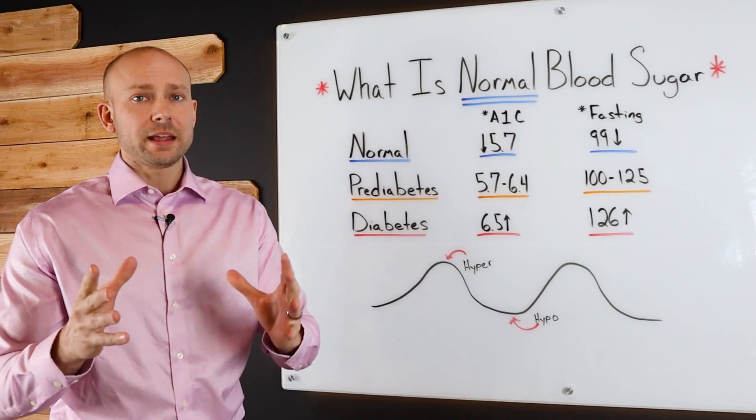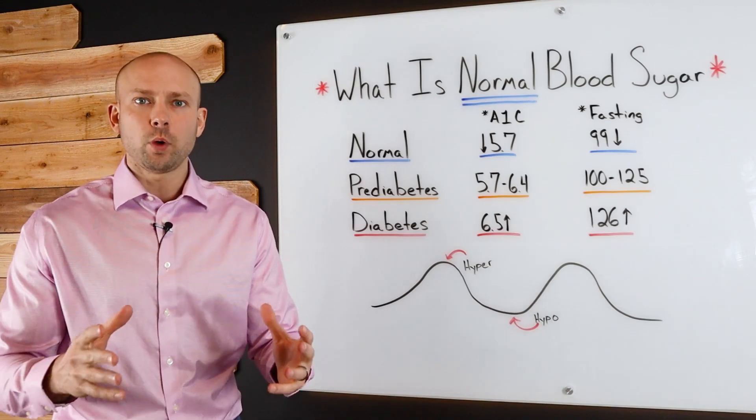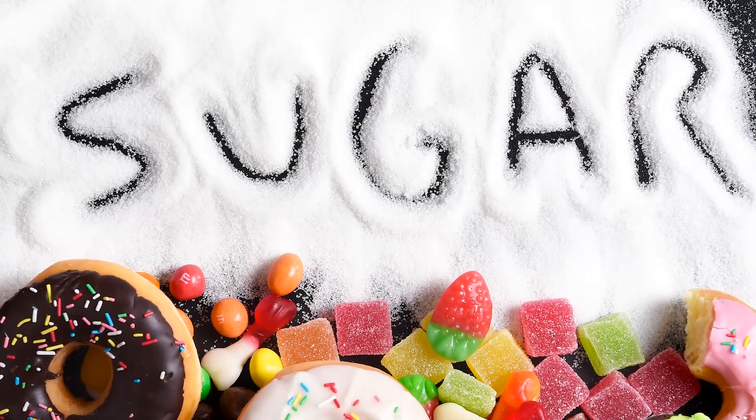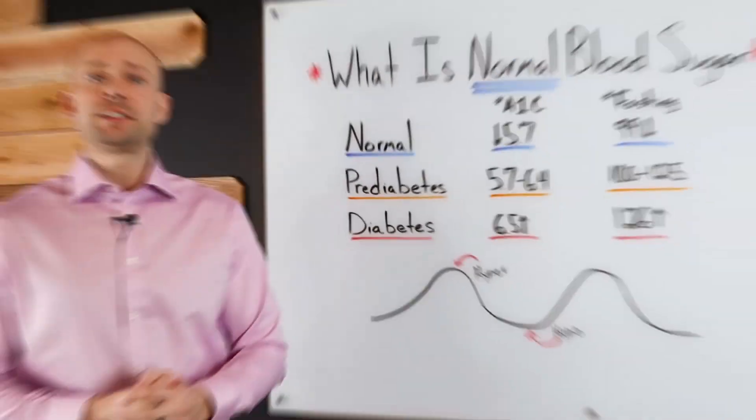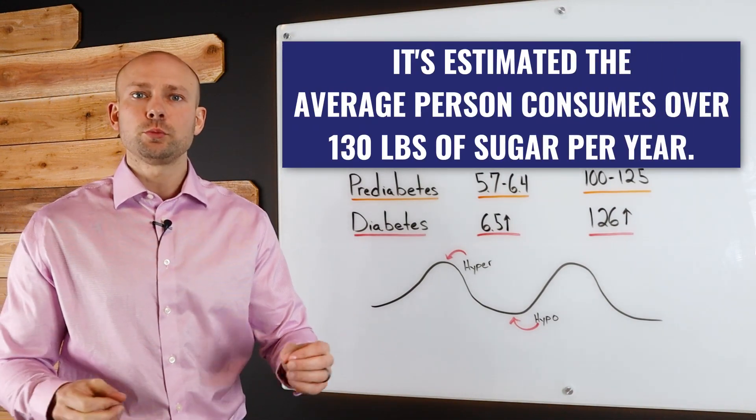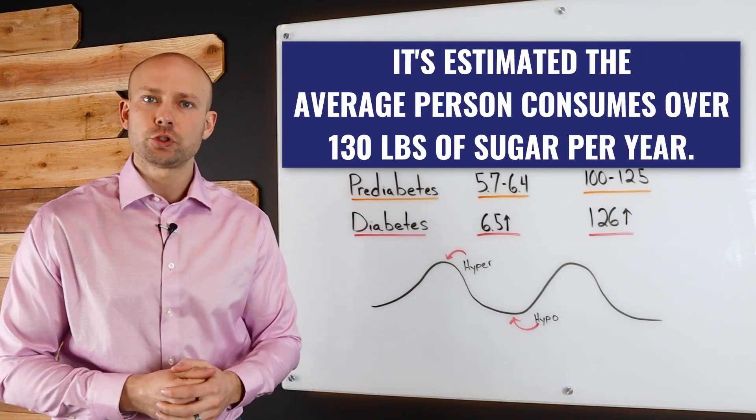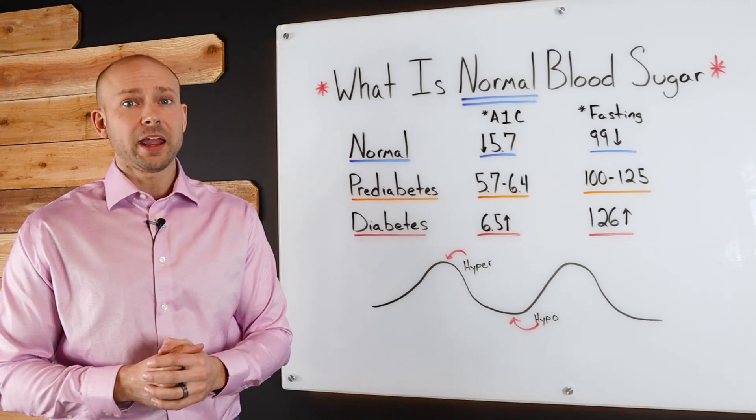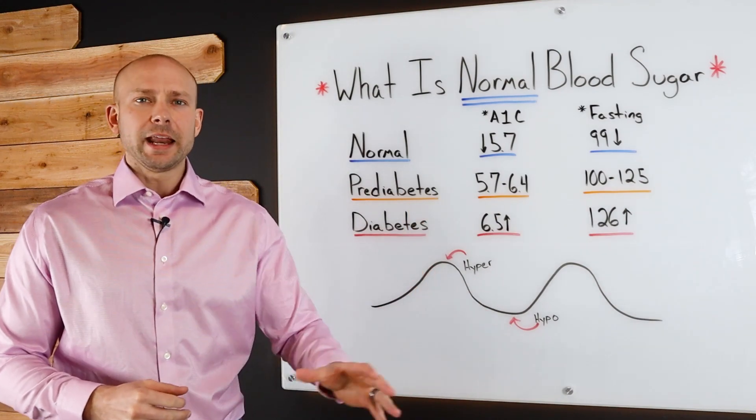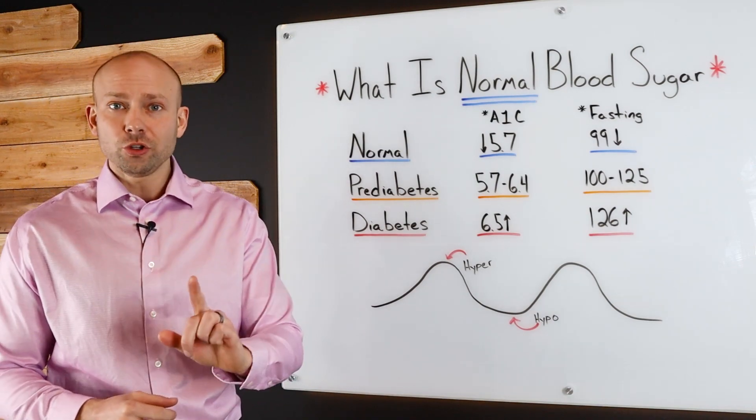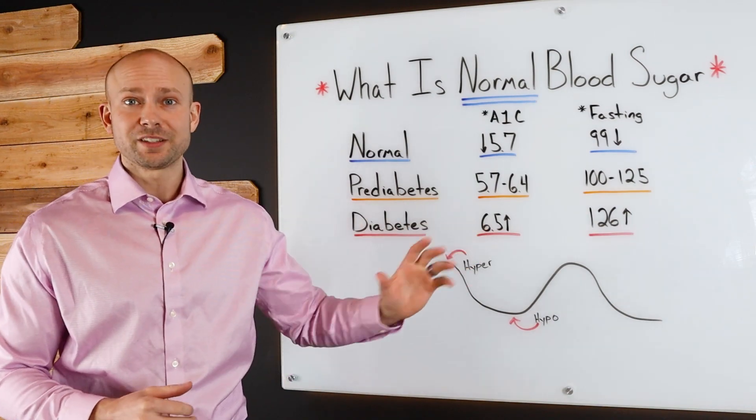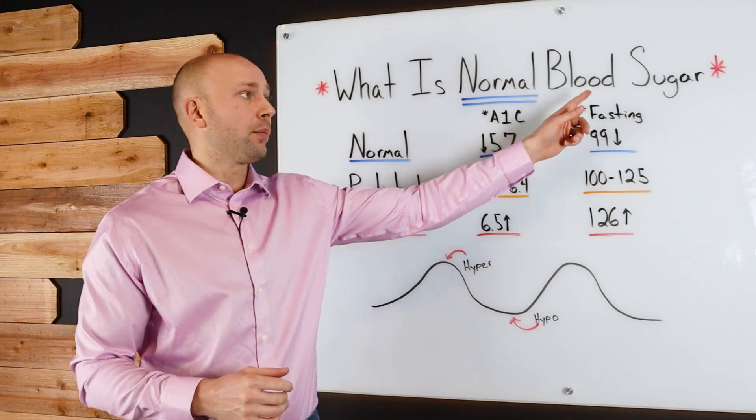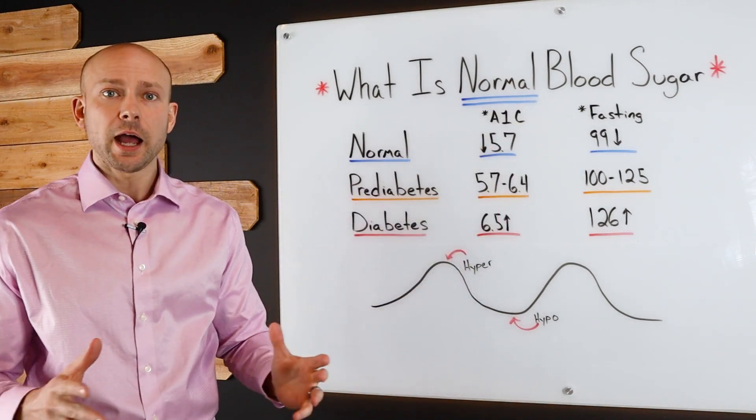The reason this topic applies to everyone is because we live in a high sugar world today. It's estimated that the average person consumes over 130 pounds of sugar per year, which is 26 times more than our ancestors used to consume 100 years ago. I bet you that disease has also gone up more than 26 times because of this problem of your blood sugar being high.